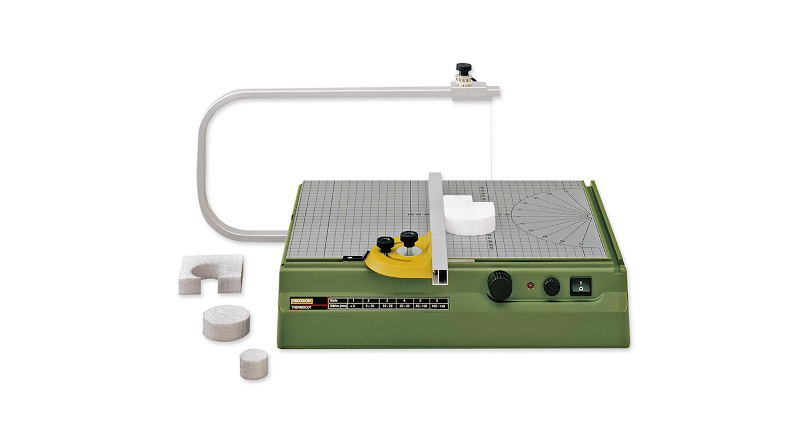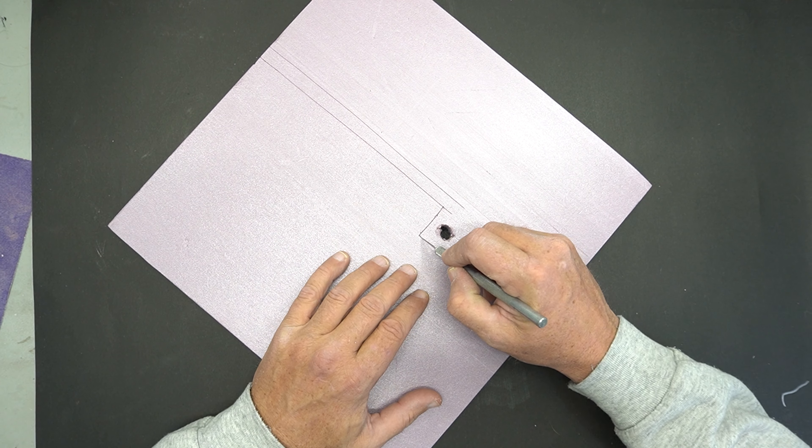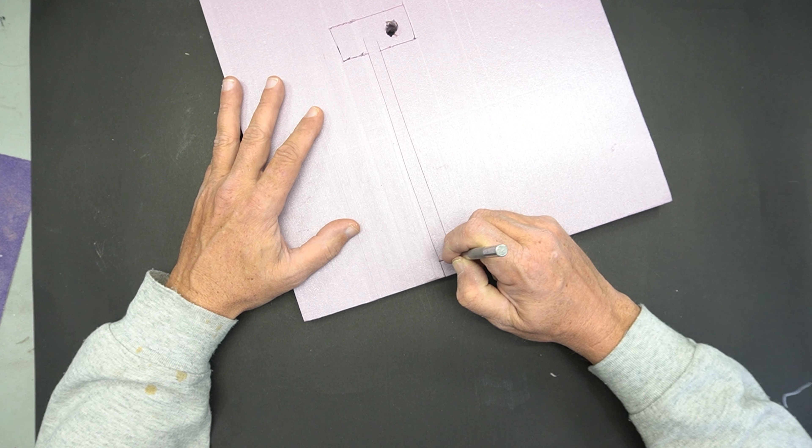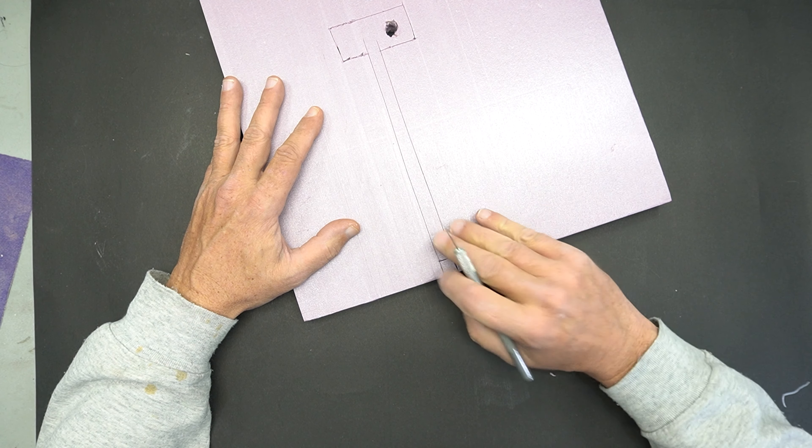The next phase of the base is to make channels for the wiring to go underneath. This way when we put the foam down into the main base, we don't have it lifted up. I couldn't find my hot foam cutter, which would have made this a lot simpler to do. I was using my X-Acto knife to make channels down the foam leading to where the circuit board is going to be underneath the base.